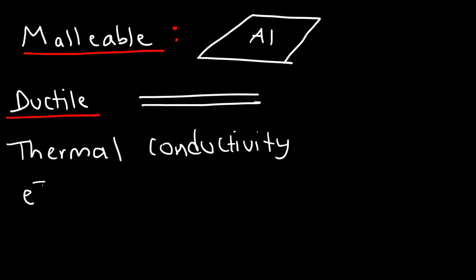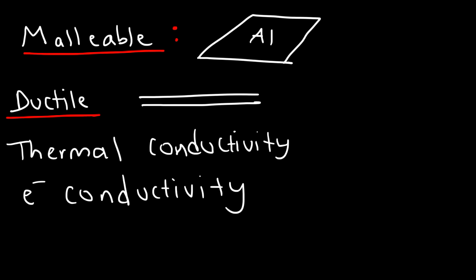Metals, as we mentioned before, can also conduct electricity, and the reason is due to the fact that the valence electrons are free to move. Because those electrons are mobile, metals can conduct both heat and electricity. Another property of metals is that they have luster — metals tend to have a shiny appearance.